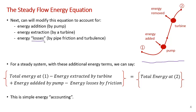There are energy losses because of pipe friction and turbulence. Energy is not truly lost — what happens is the energy in the flow gets converted to heat. The fluid in the pipe gets warmed a little bit. For the purpose of Bernoulli's equation, it's lost because we're only keeping track of pressure energy, kinetic energy, and elevation head — not thermal energy. So for a steady-state system, we can add these additional energy addition and removal terms. The total energy at 1 minus the energy extracted by the turbine plus the energy added by the pump minus energy losses by friction equals the energy at 2. It's just simple accounting — like a bank account.